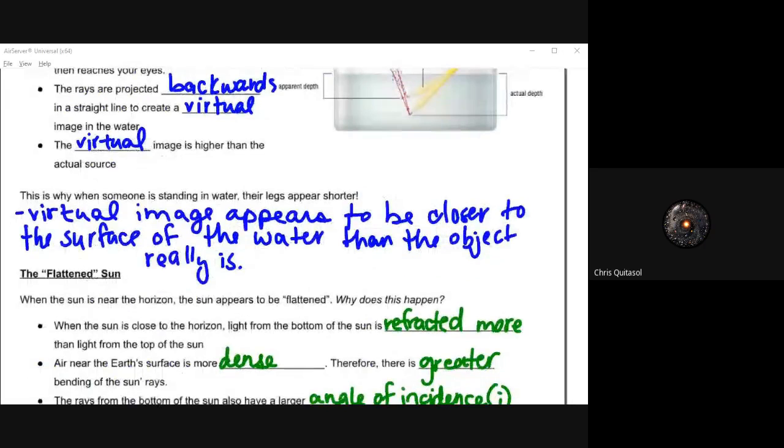This is why when someone is standing in water, their legs appear shorter. It creates a virtual image which appears to be closer to the surface of the water than the object actually is. This creates that virtual image with those virtual rays and the apparent depth is different.